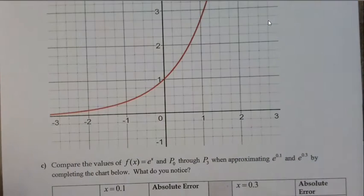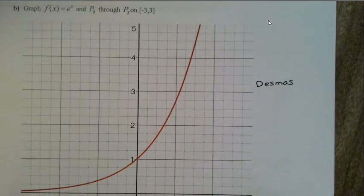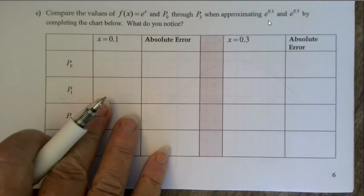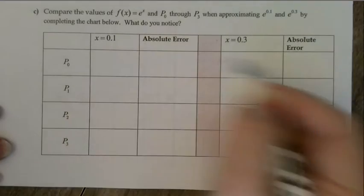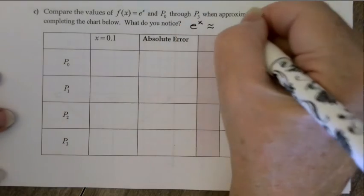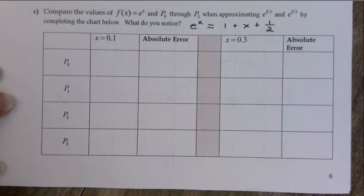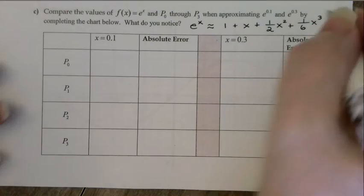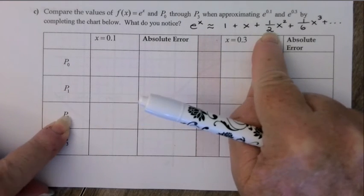There we are graphically — I just did that on Desmos to get the graph. Now I want to compute two different values: I'd like to approximate e^0.1, and then also approximate e^0.3. We'll complete our chart. Our e^x approximation is: 1 plus x plus (1/2)x^2 plus (1/6)x^3 and so on. I'm going to do p0, p1, p2, and p3 for these.